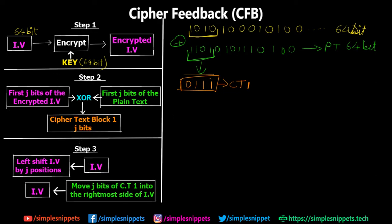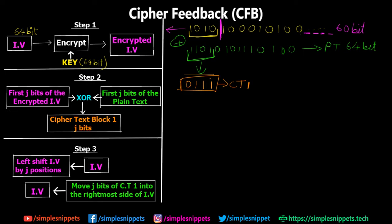Step number three is where the concept of shift registers comes into picture. What happens is we perform a left shift of the IV by j positions — and j here we're assuming is four. So we shift the IV four positions to the left. We used the first four bits of the IV, so we exclude them, and this becomes the starting point for the next iteration. When we exclude those first four bits, the IV becomes 60 bits — initially it was 64 — and there are four empty places on the rightmost side.